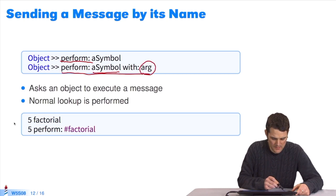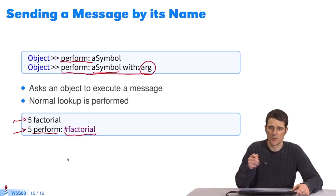An example, if I do 5 factorial, sending a classic message, and send the reflective message, it's 5 perform hashtag factorial. That's a symbol, which means object 5, please execute or receive the message factorial. The normal lookup is applied, and these two forms are the same.